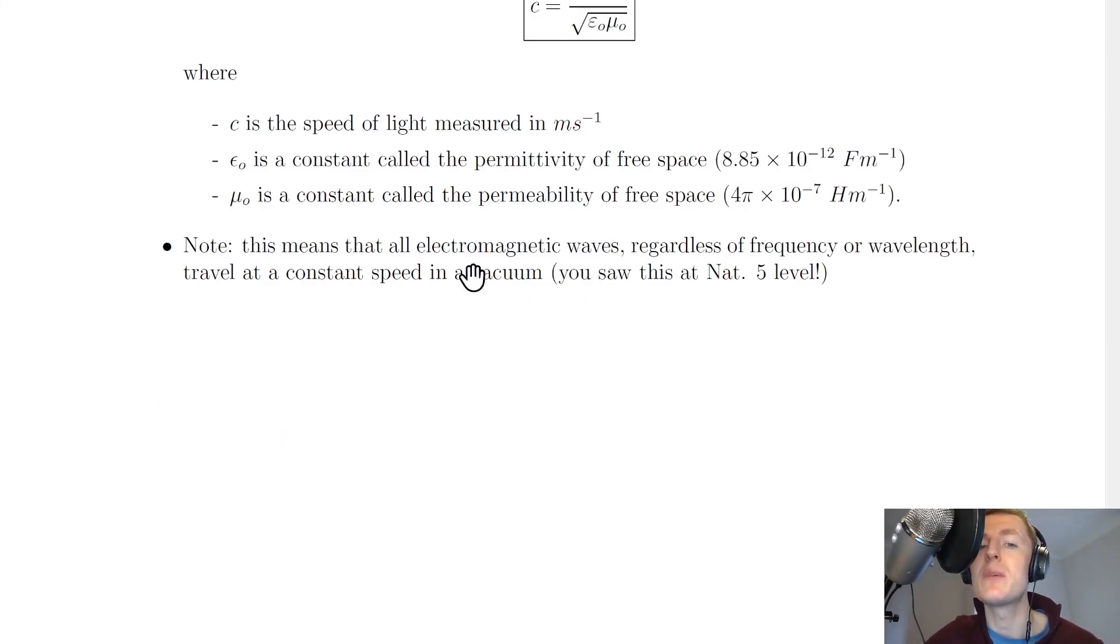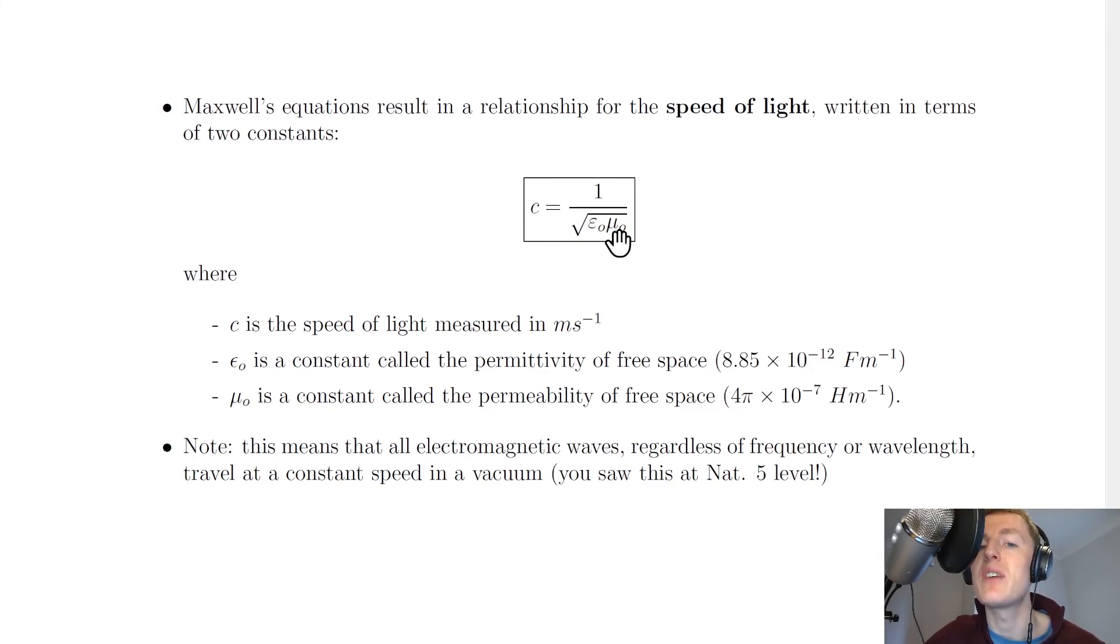This means that all electromagnetic waves, regardless of frequency or wavelength, travel at a constant speed in a vacuum. The fact that the speed of light c is found using two constant values means that the speed of light itself must be a constant value.